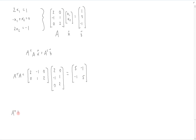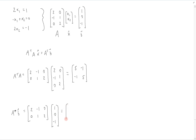Then there is A transpose b. So once again A transpose is shown here, and b is just our vector 1, 0, negative 1. Multiplying that out we get 2, negative 2.